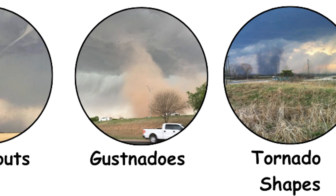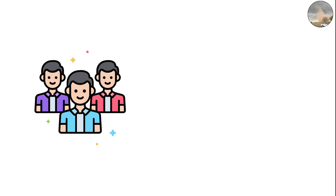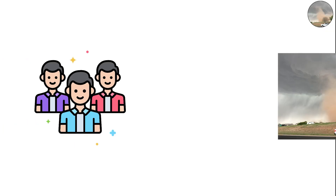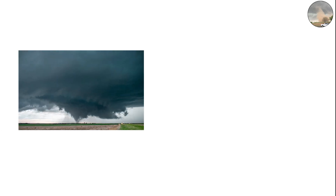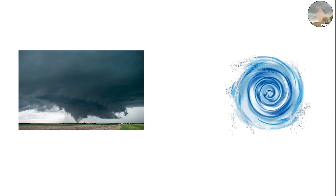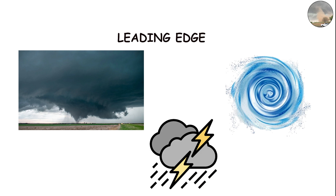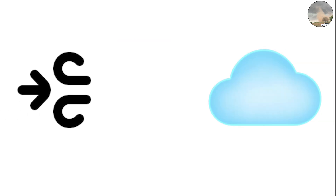Gustnadoes — tornado lookalikes. Sometimes people mistake gustnadoes for real tornadoes. Gustnadoes are small, short-lived whirlwinds that form along the leading edge of a thunderstorm's gust front. They're caused by horizontal wind shear but don't connect to the cloud base, meaning they're not true tornadoes.